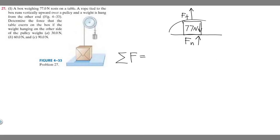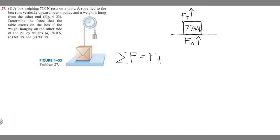We write out all our forces. The tension force F sub t is going upward, so it's positive. The weight of 77 newtons is downward, so it's minus 77. And F sub n is also going upward, so it's positive. Our equation is: F sub t minus 77 plus F sub n.